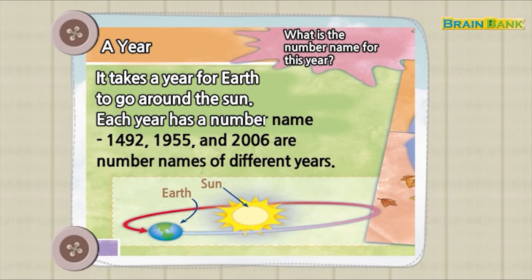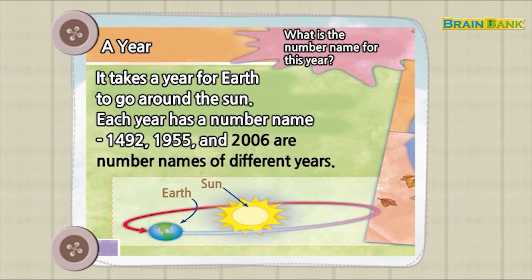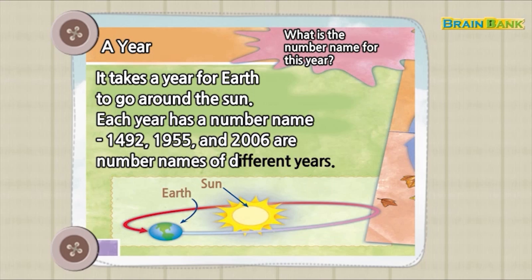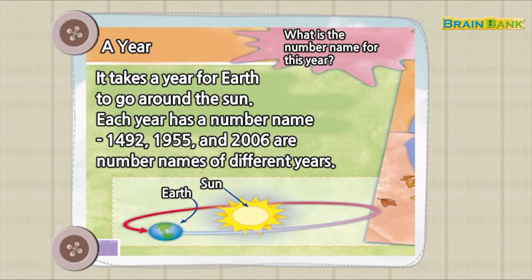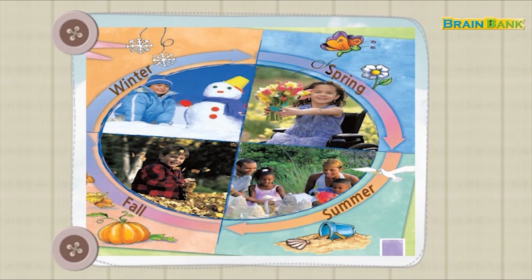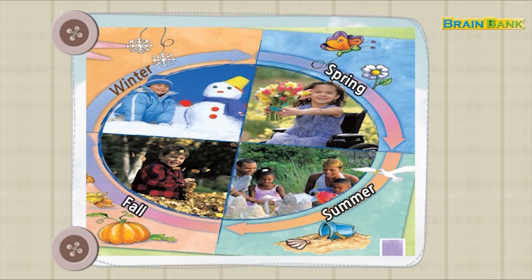A year. Earth. Sun. Spring. Summer. Fall. Winter.